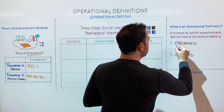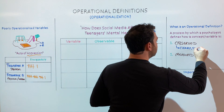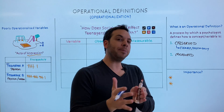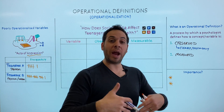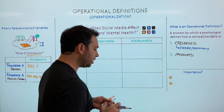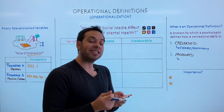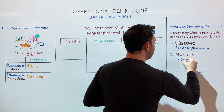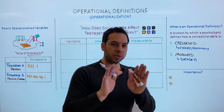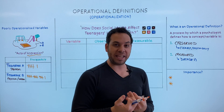Let's break those down. 'Observed' essentially means that we have clearly and specifically defined the variable concepts in our study, so that if two people are looking at the same thing, they know exactly what to look for — there's no ambiguity. The second part is we have to measure our variables, meaning when you collect data, you have to be collecting numbers — something quantifiable. So for every concept or variable in our study: can you observe it clearly, and how are we measuring it?